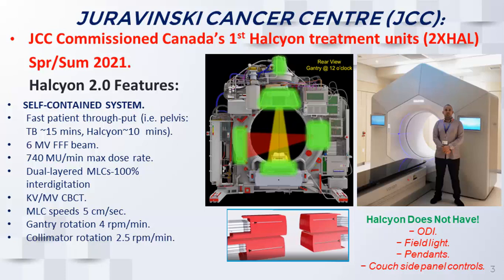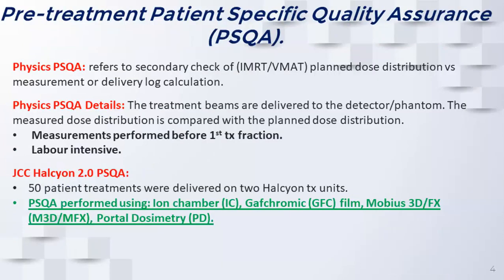The Halcyon is a very unique treatment unit. Just last year, in spring/summer of 2021, we commissioned here at the JCC Canada's first Halcyon treatment units — essentially two of them. There are a lot of unique features, namely a very fast patient throughput, a unique 6MV flattening filter-free beam, dual-layered MLCs that are interdigitated, and a number of parameters that are quicker than traditional C-arm linac type treatments. The Halcyon does not have an ODI, a field light, pendants, or couch-side panel controls — it's essentially a self-contained system.